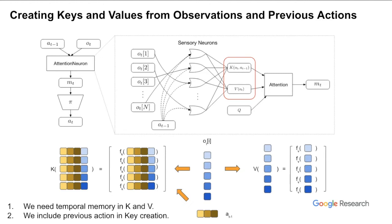Here we made two design choices. First, we need temporal memory in k and v. Since the ordering of inputs is arbitrary, having access to a stream of data makes it easier for attention neurons to identify the inputs. However, this alone may not be sufficient — for example, when controlling a legged robot, most sensory readings are joint angles or velocities from the legs, which are numerically identically bounded and change in similar patterns. To address this, we include the previous actions in the key creation to allow causal relation inference.